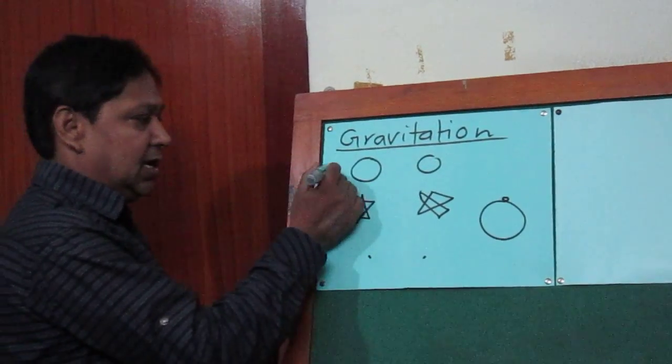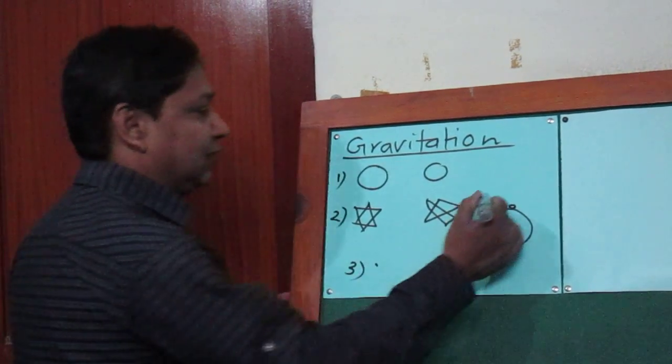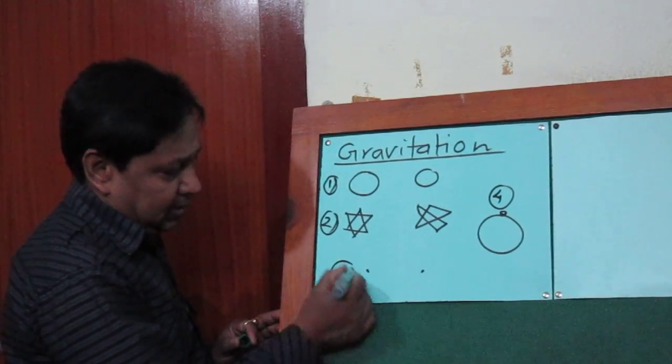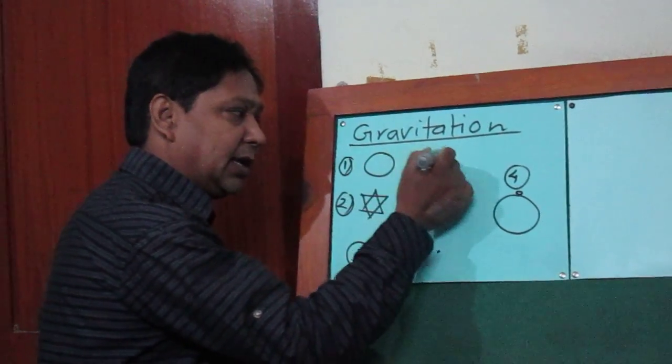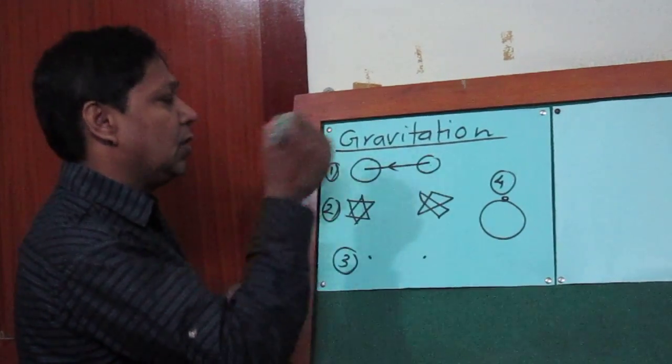In every set - look at this: one, two, three, and four - in every set there are two bodies. I took two bodies. This heavenly body attracts this body towards its center. This heavenly body also attracts the first one towards its center. There is a force of attraction between them.